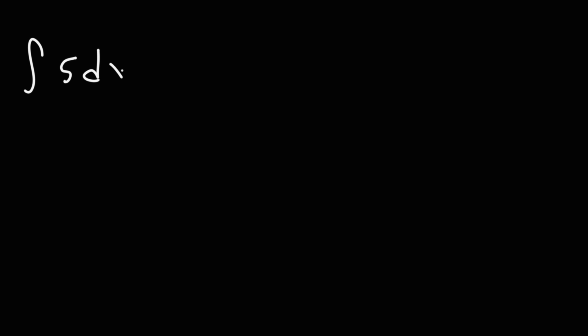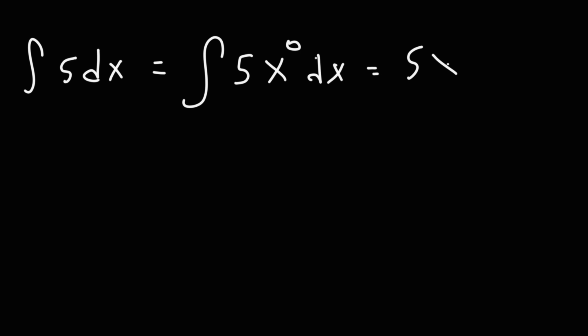By the way, the first formula works with the power rule as well. 5 is the same as 5 times x to the 0, since anything raised to the 0 power is 1. So when you add 1 and divide by 1 you end up with 5x.